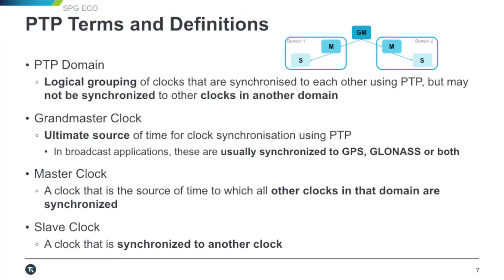Some terms and definitions. A PTP domain is a logical grouping of clocks that are synchronized to each other, but they may not be synchronized to clocks in another domain. You can have separate domains on separate time bases. A grandmaster clock is the ultimate source, usually synchronized to GPS or GLONASS or possibly both. A master clock is what is synchronizing the other clocks in that domain. A slave is synchronized to another clock.